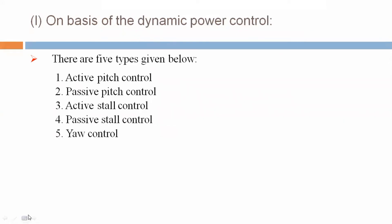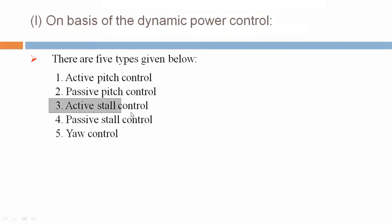I: On the basis of dynamic power control, there are five types: first, active pitch control; second, passive pitch control; third, active stall control; fourth, passive stall control; and fifth, yaw control.